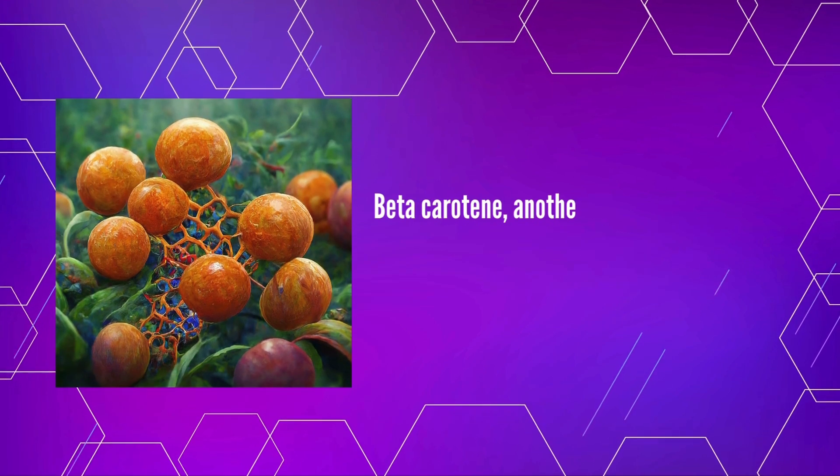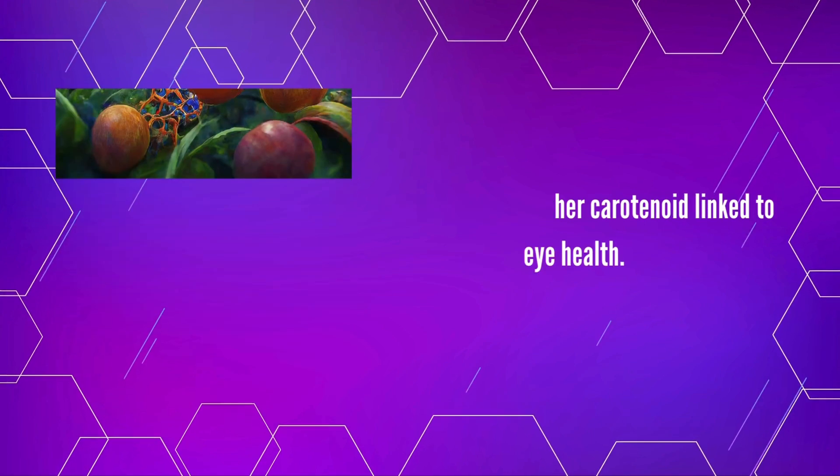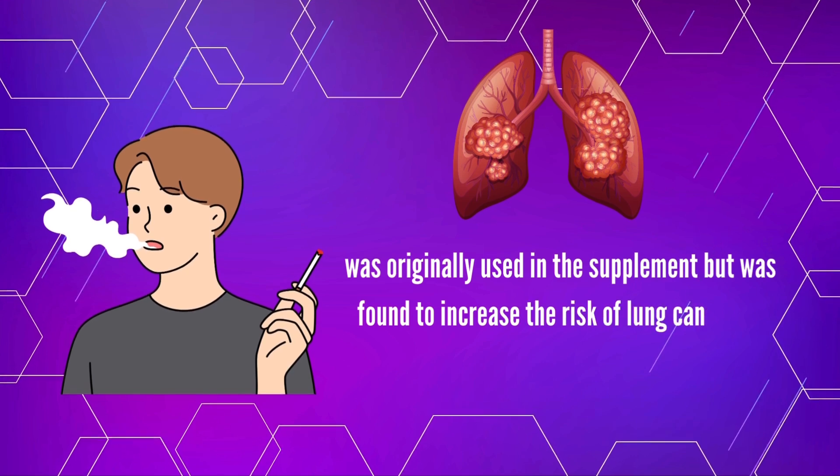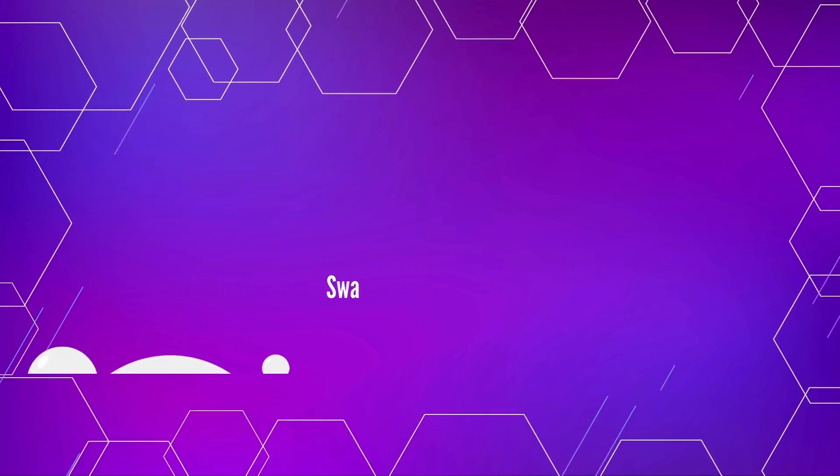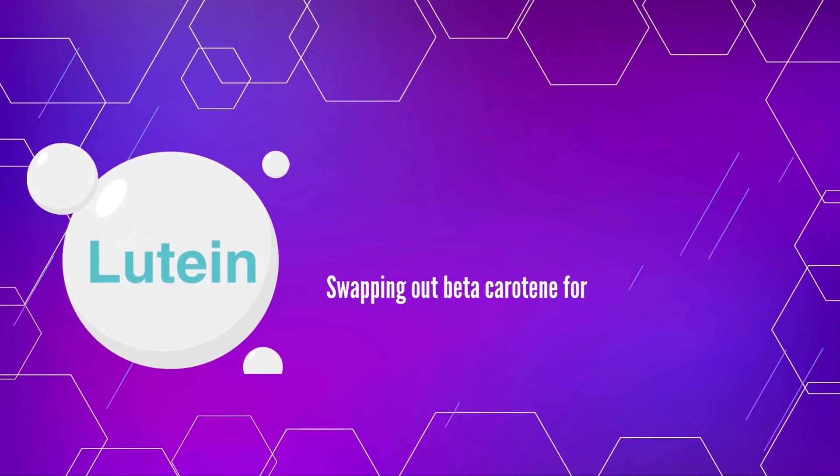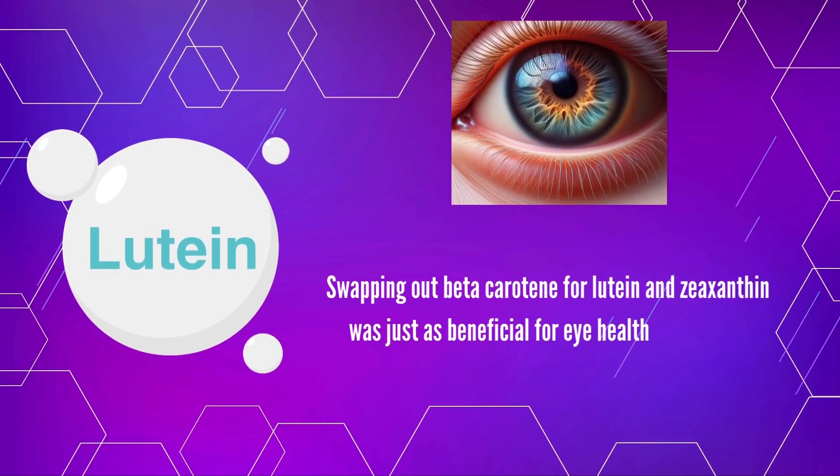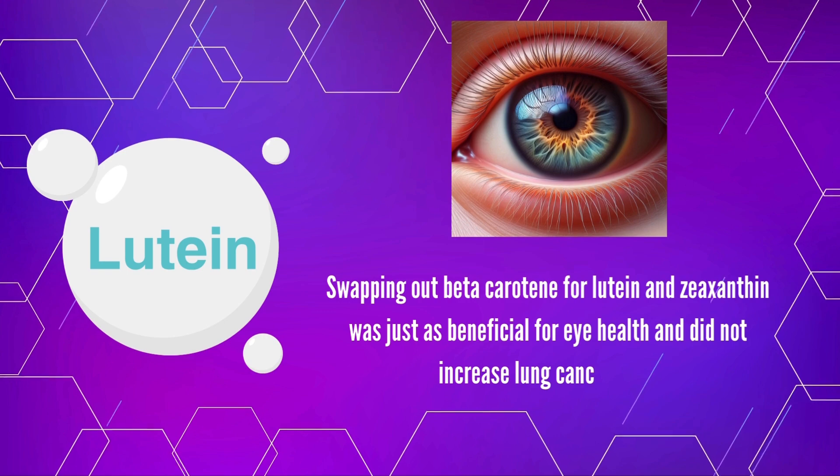Beta-carotene, another carotenoid linked to eye health, was originally used in the supplement, but was found to increase the risk of lung cancer in people who smoke. Swapping out beta-carotene for lutein and zeaxanthin was just as beneficial for eye health and did not increase lung cancer risk.